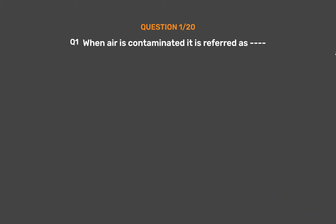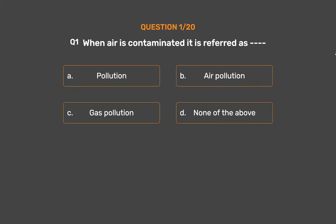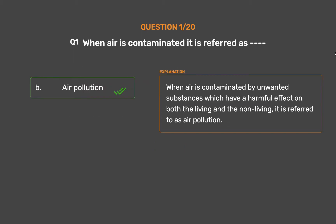Question number 1: When air is contaminated, it is referred as — Option A: Pollution. Option B: Air pollution. Option C: Gas pollution. Option D: None of the above. The correct answer is Option B: Air pollution. When air is contaminated by unwanted substances which have a harmful effect on both the living and the non-living, it is referred to as air pollution.